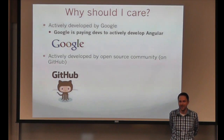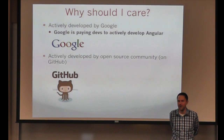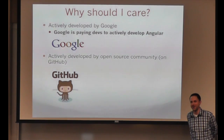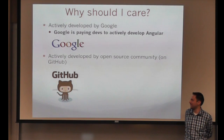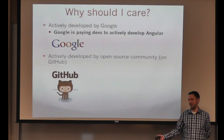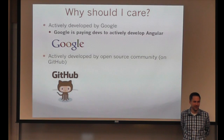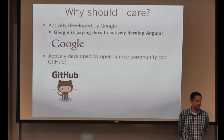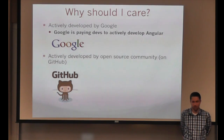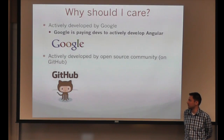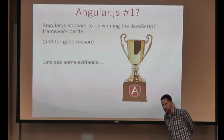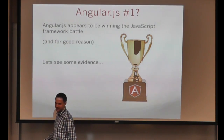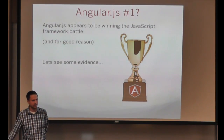Google likes to develop things and then sometimes walk away from them — but it's on GitHub and it's open source. So if they do that at any time in the future, it's got a huge following already. I'm going to make a bold statement here: I kind of feel like Angular is winning the JavaScript framework battle right now, and for good reason. Let's take a look at some objective evidence. When I put these frameworks in Google Trends, Angular since about January of last year has taken off like a rocket ship compared to Backbone, Ember, and Knockout.